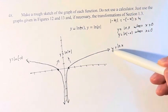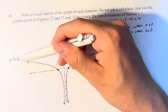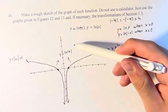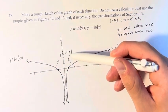So this is the graph of y = ln(x). This is the graph of y = ln(-x). And together they form the graph of y = ln(|x|).